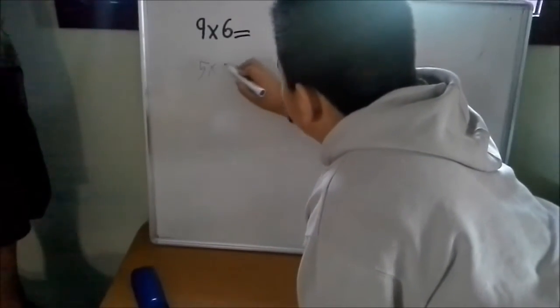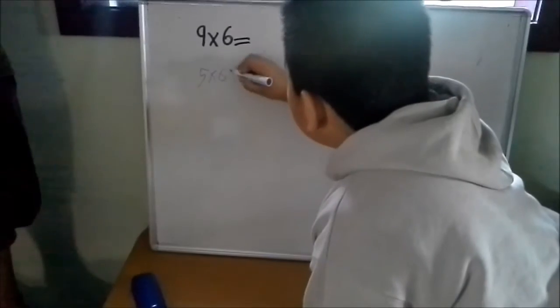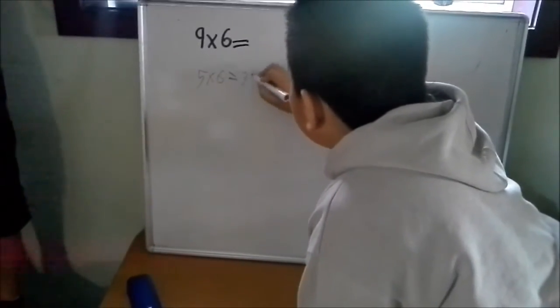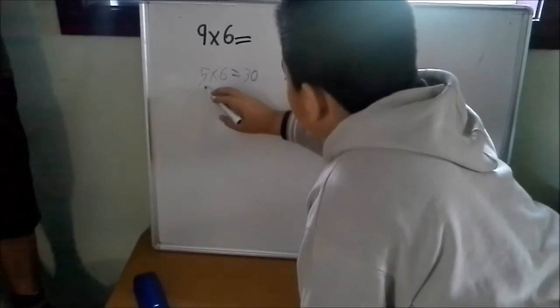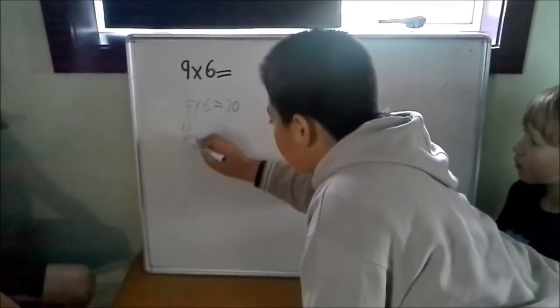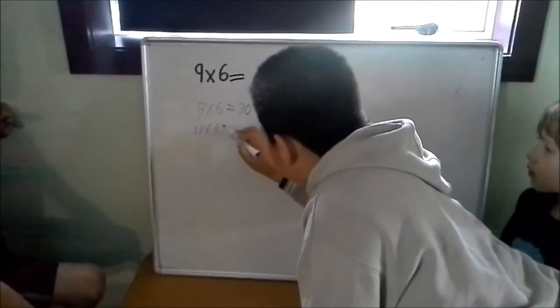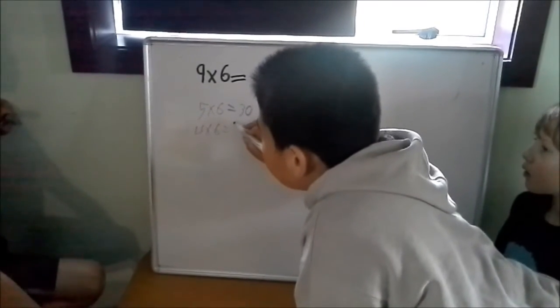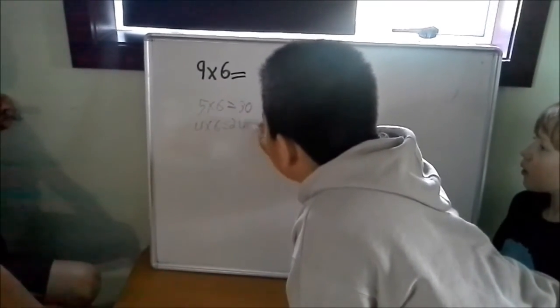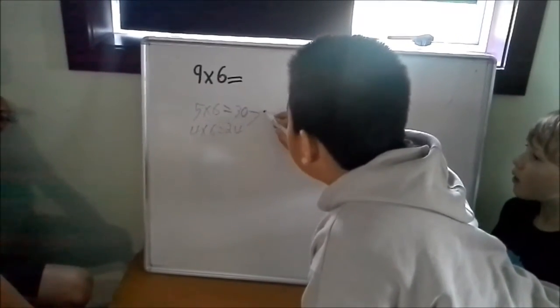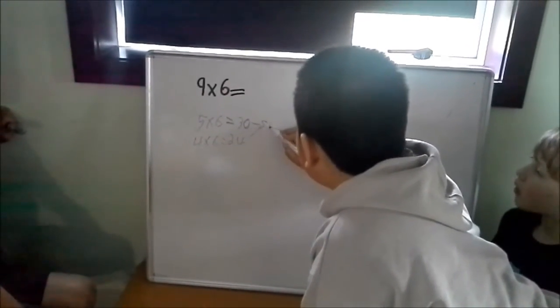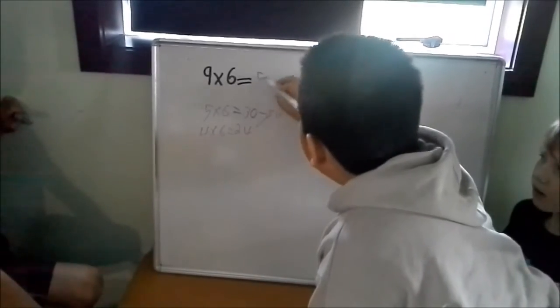Five times six equals thirty. And then we're going four times six equals three. Add these together equals fifty-four. So that's going to be fifty-four.